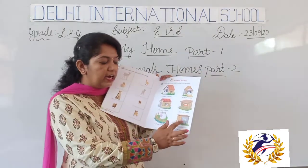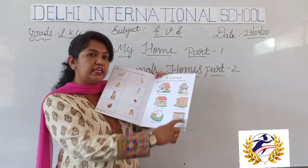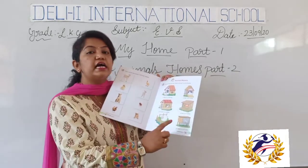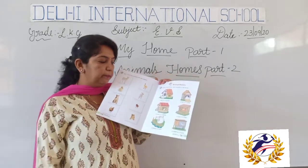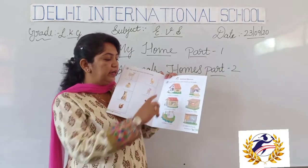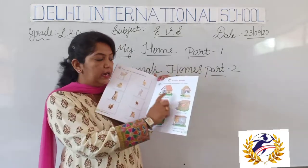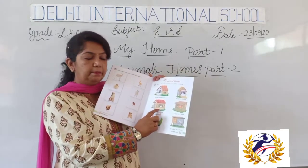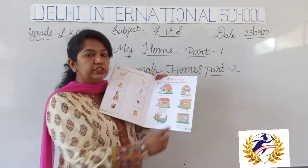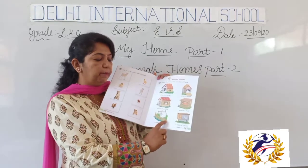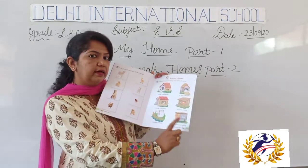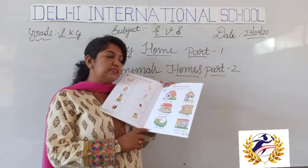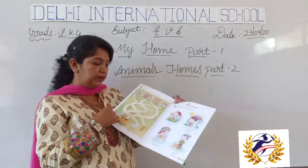A rabbit in a hutch — the rabbit's house we call it a hutch. Once again: a dog in a kennel, a hen in a coop, a horse in a stable, a cow in a shed, a sheep in a pen, a rabbit in a hutch. You have to practice this.